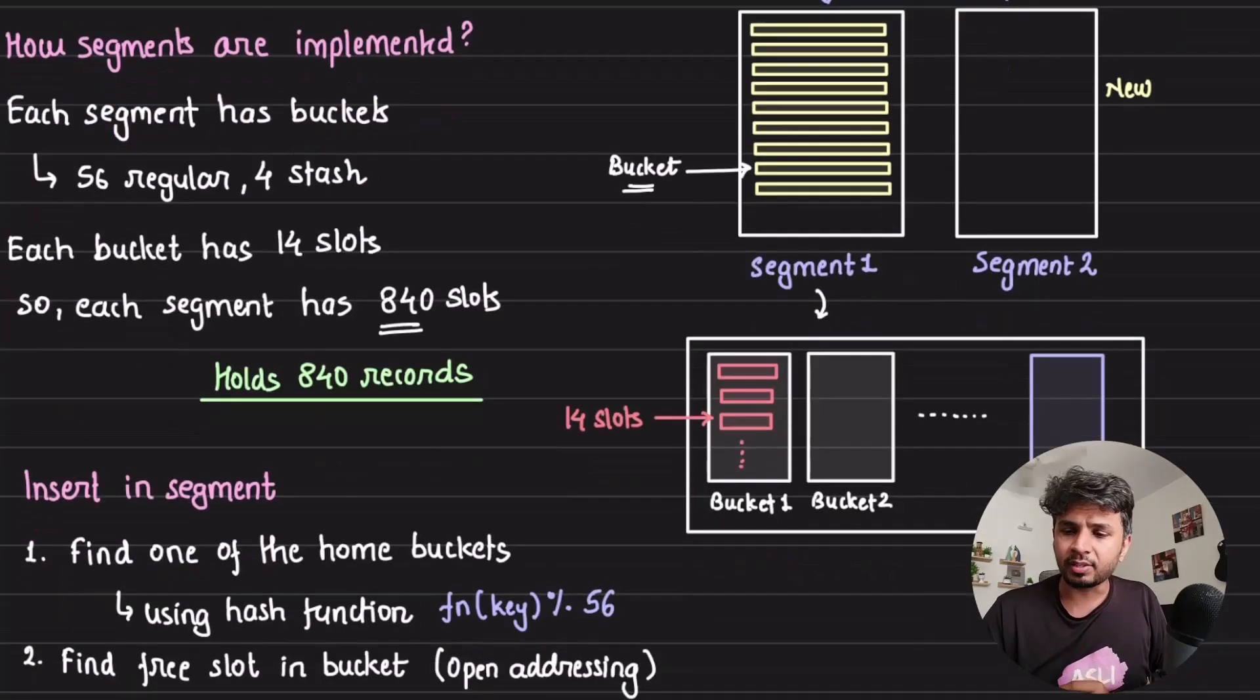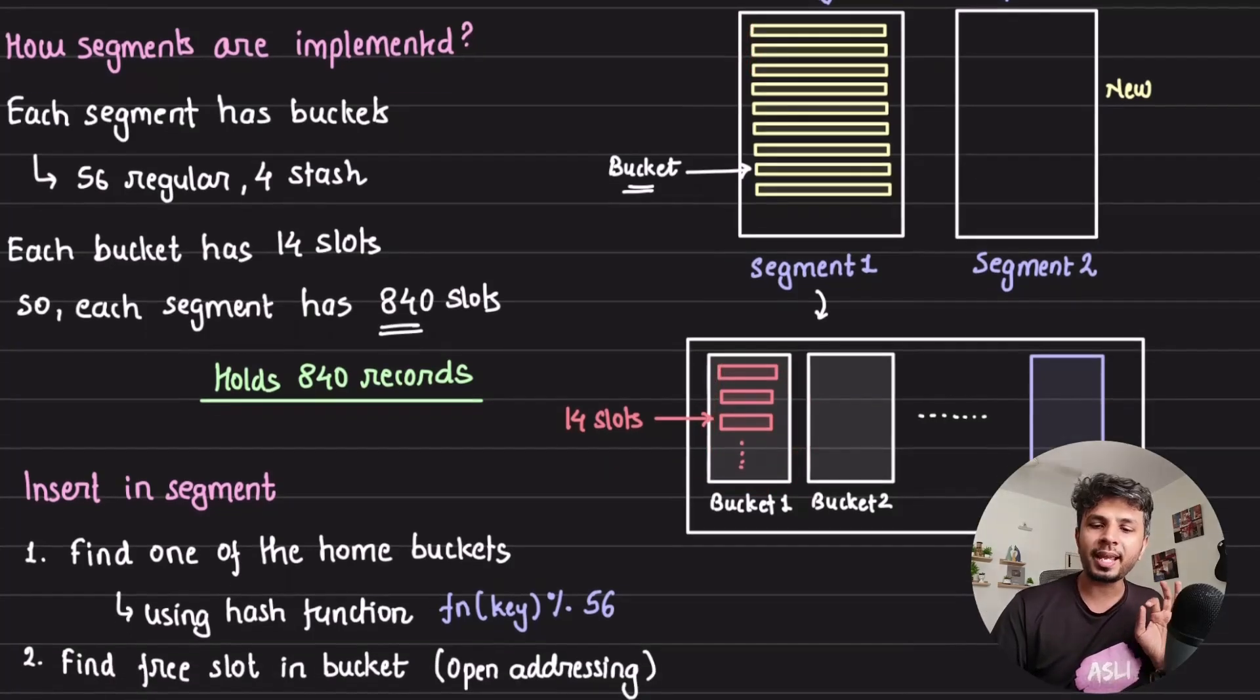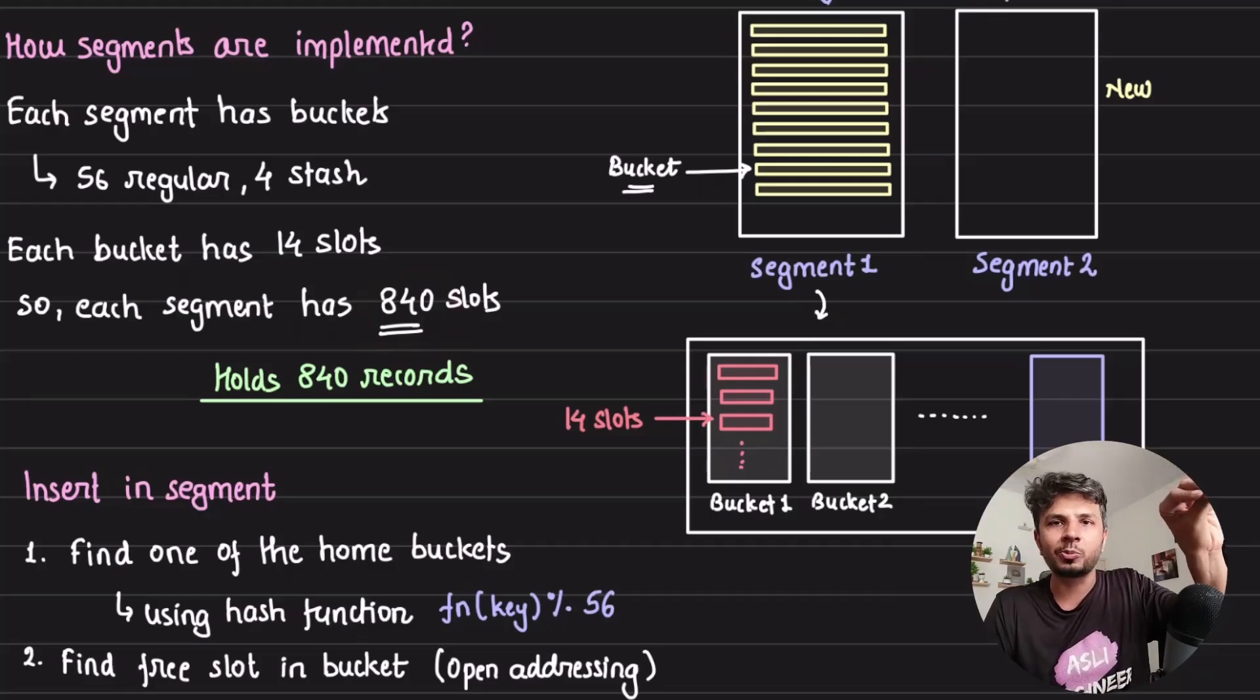Each bucket has 14 slots. These are buckets and each bucket has 14 slots. So total 840 slots in my bucket. Imagine each slot to be able to hold one key-value pair, very similar to dict entry. So total number of entries I can hold is 840 in each segment. This is a fixed size segment.